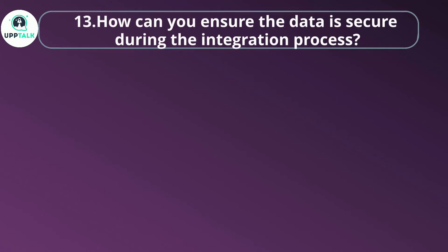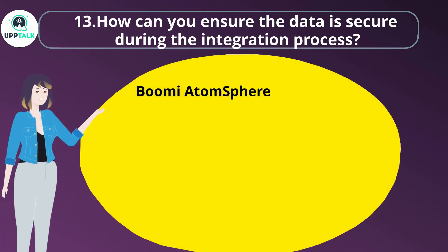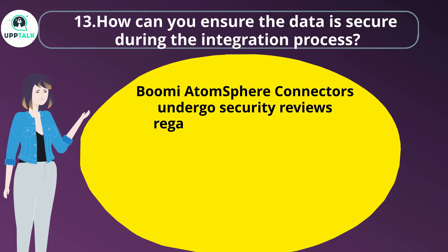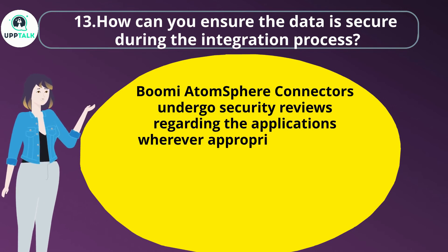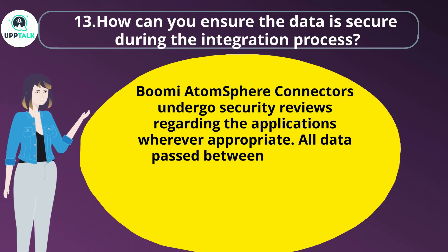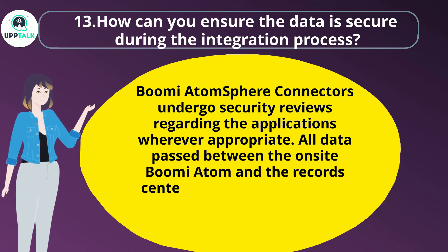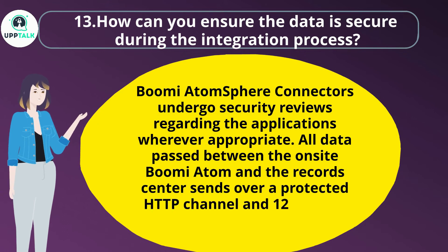Question 13: How can you ensure the data is secure during the integration process? Boomi Atmosphere connectors undergo security reviews regarding the applications wherever appropriate. All data passed between the on-site Boomi Atom and the data center is sent over a protected HTTPS channel with 128-bit file encryption.